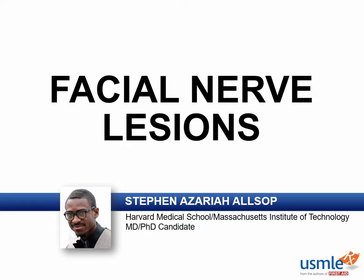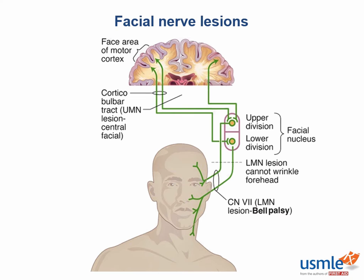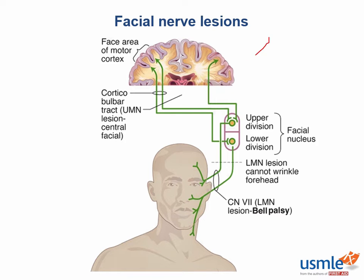Let's discuss how the facial nerve innervates the facial muscles and how this can manifest in the clinic. We also want to differentiate upper from lower motor neuron lesions in the face. Upper motor neuron lesions can occur anywhere from the motor cortex all the way down to the facial nucleus in the pons, manifesting as motor weakness on the contralateral side. Lower motor neuron lesions occur anywhere along the facial nerve and produce motor weakness on the ipsilateral side.